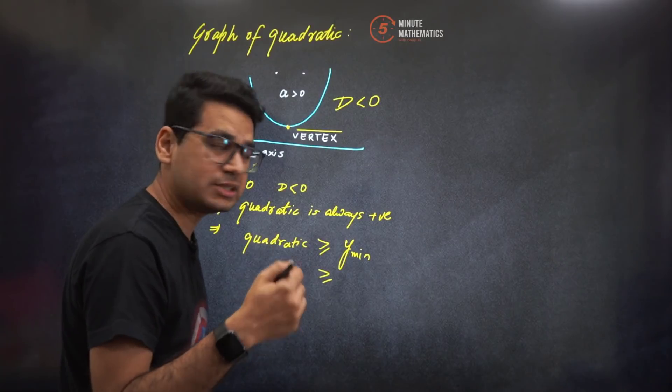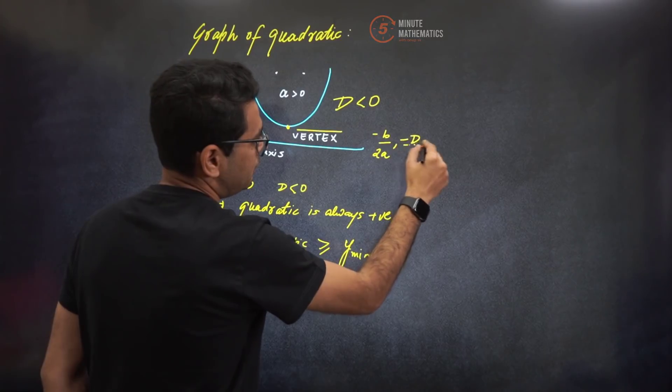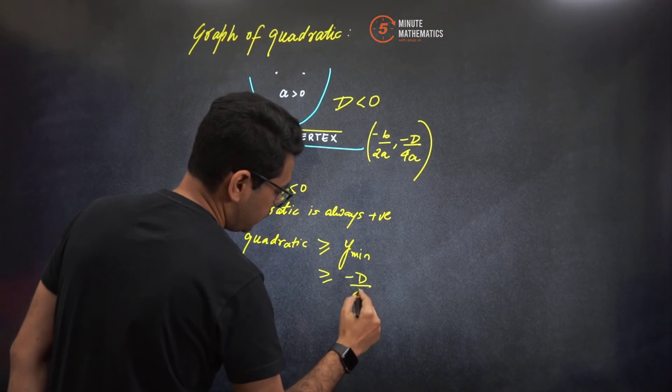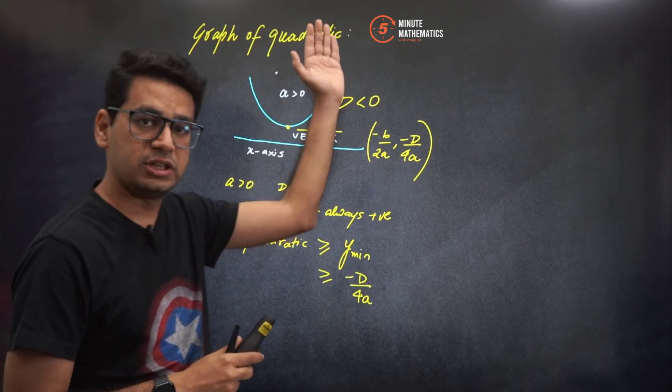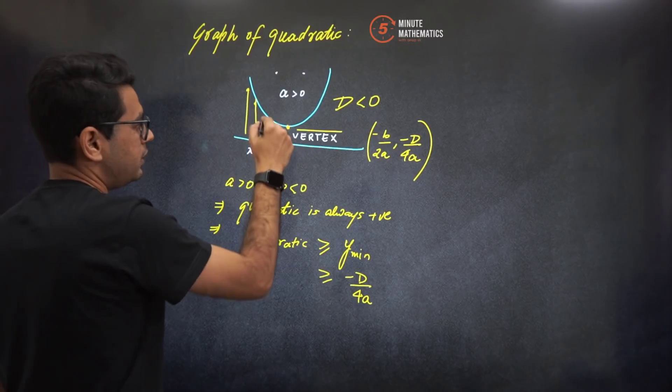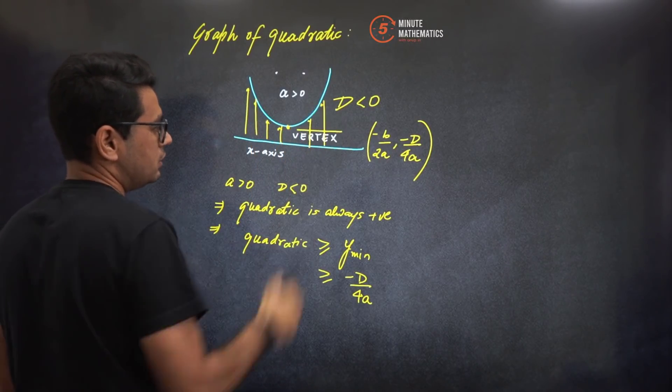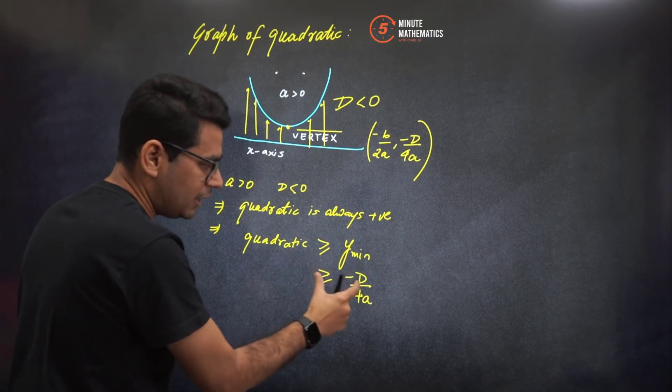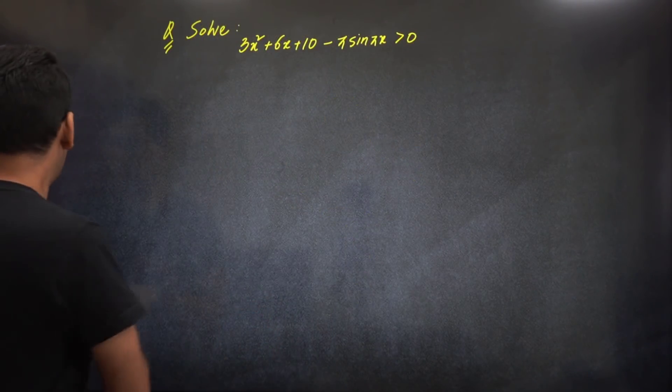The value at the vertex is (-b/2a, -d/4a). And if we talk about the y value, it is -d/4a. This particular concept that the quadratic will always be positive - why are we saying quadratic is always positive? Because it is always above the x-axis. If it is always above the x-axis, that means the quadratic is always positive and the quadratic minimum value will be the value at the vertex which is -d/4a.